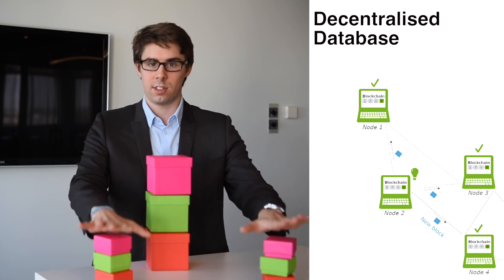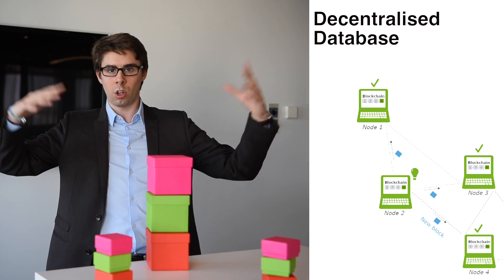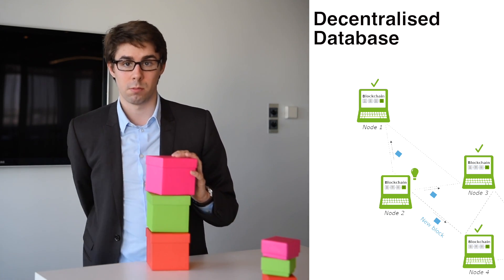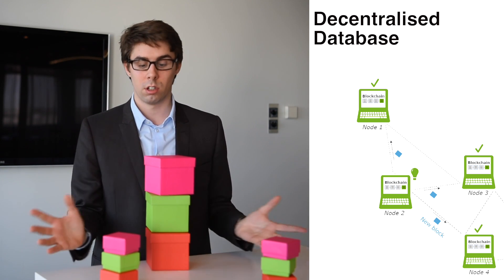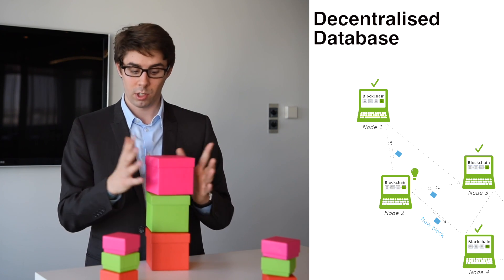Now, we have a chain of blocks. It's decentralized. There are duplicates everywhere over the world. Tens, hundreds, thousands of duplicates all over the world. So if one of them falls away, there is no problem. Everybody else can create a duplicate again for him.